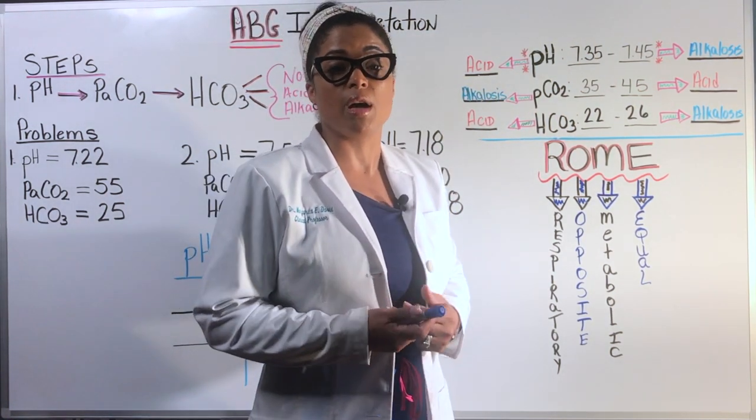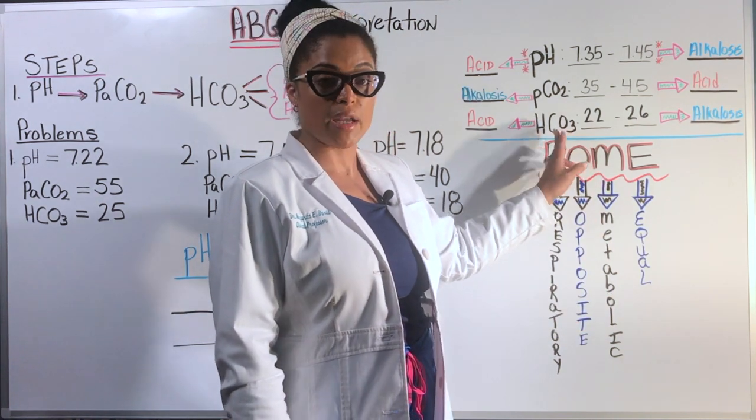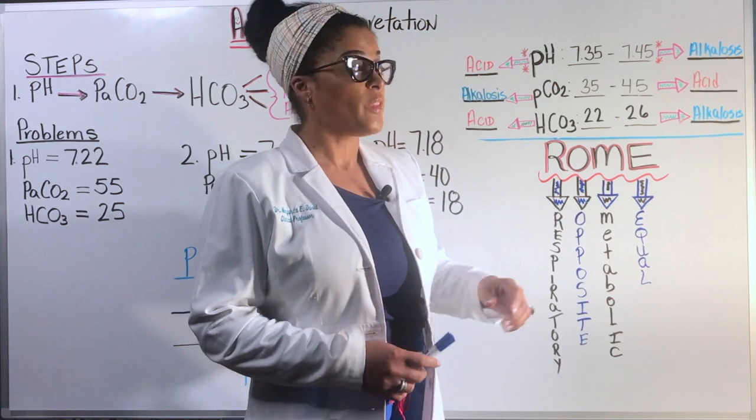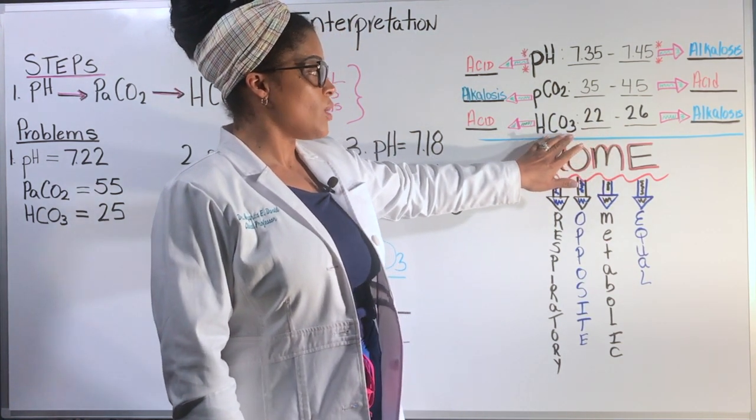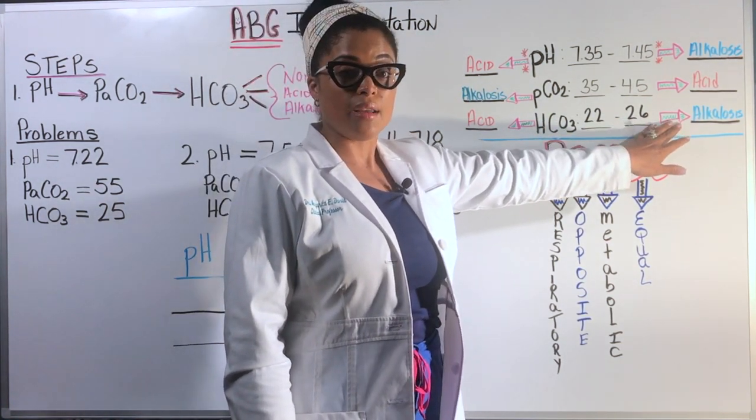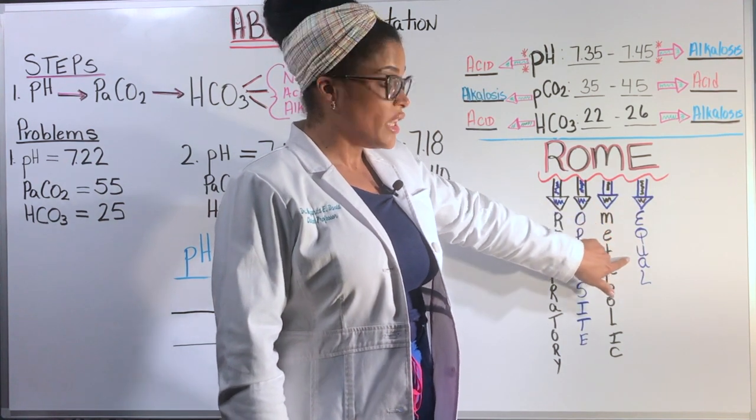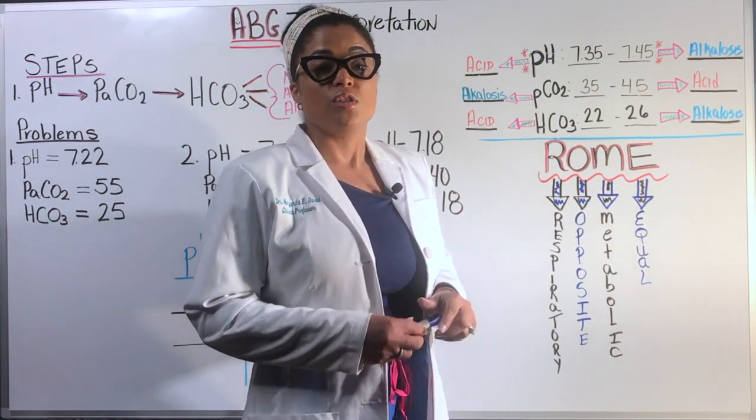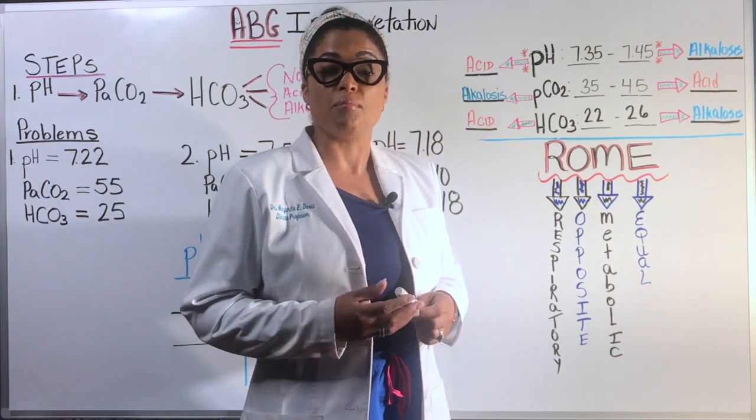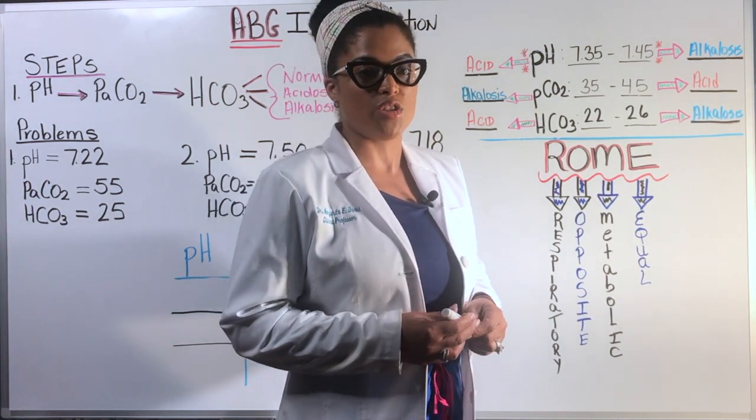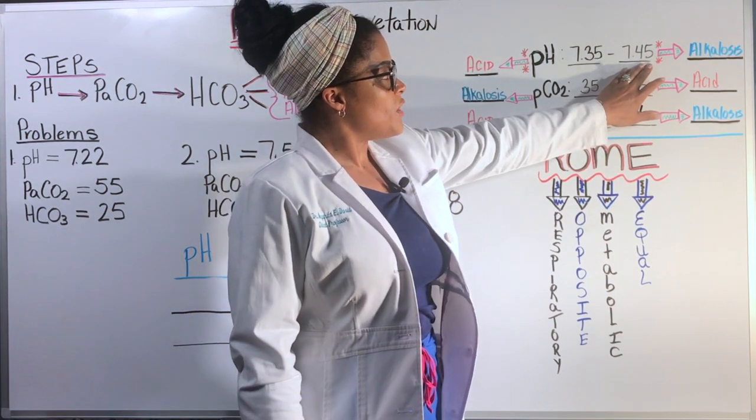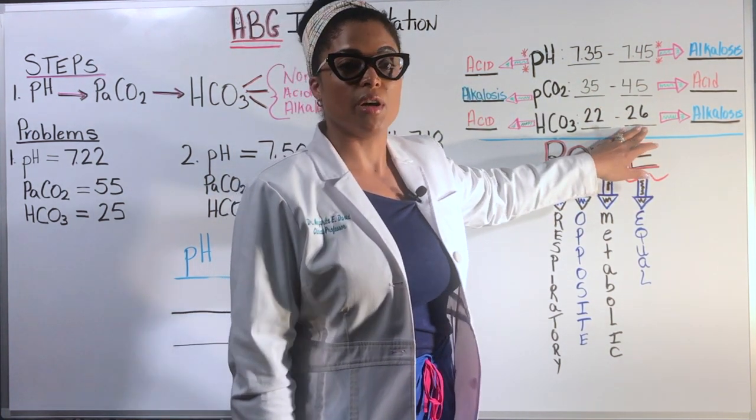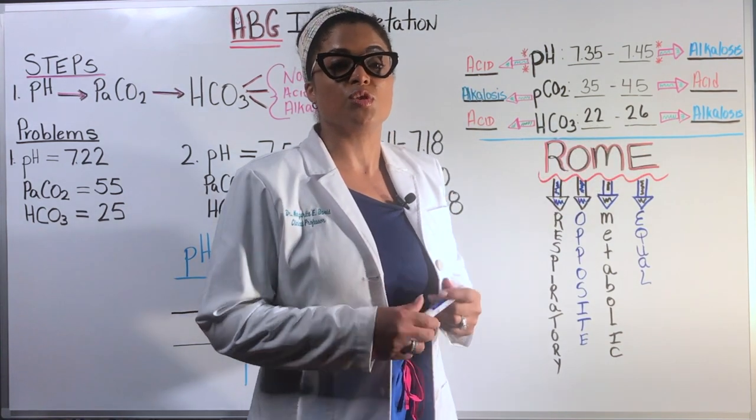Another example is with metabolic, which stands for the bicarb. So if I have a patient that's in metabolic alkalosis, I know that my bicarb is going to be high, but because it goes equal to my pH, the pH is going to be high. So in metabolic alkalosis, you're going to have a high bicarb and high pH. The pH will be above 7.45 and the bicarb will be above 26 because they go together.